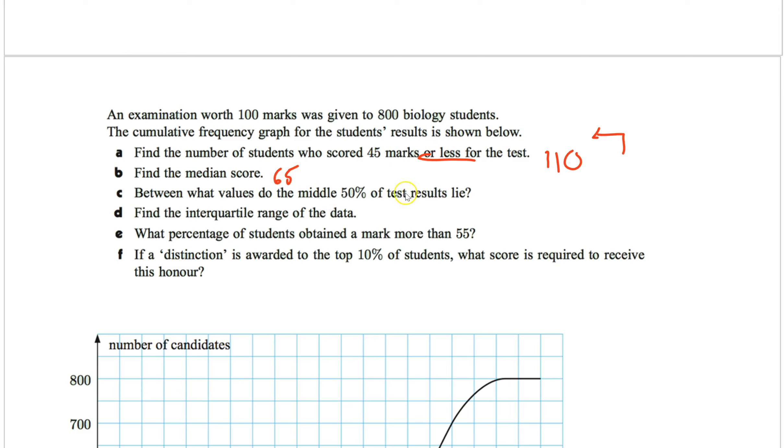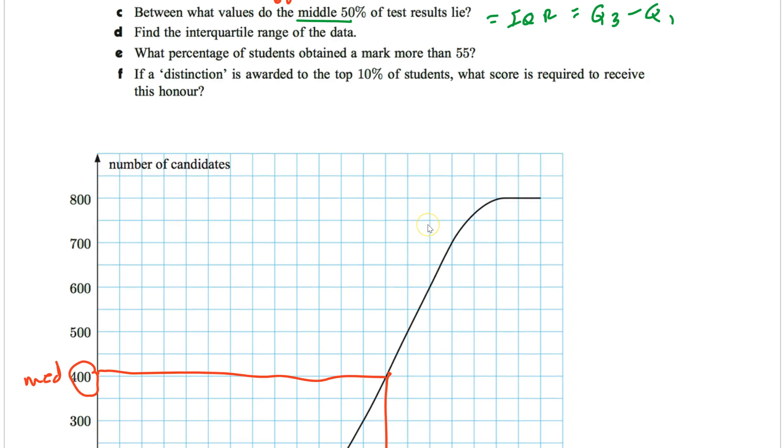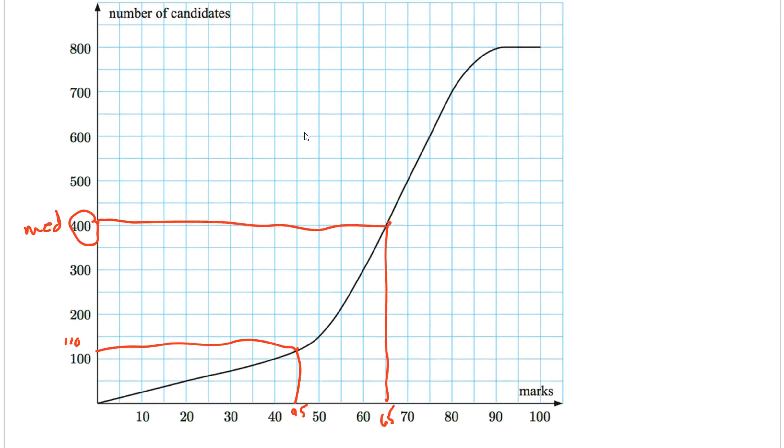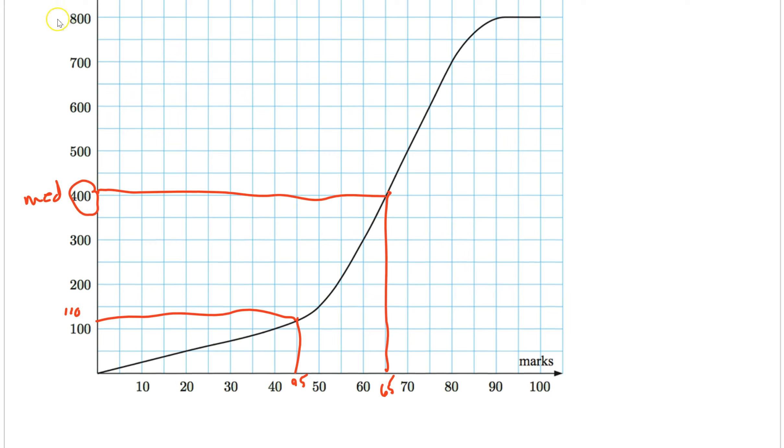Now the middle 50%, between the values of the middle 50%. Now that's just like vocab. Everyone's middle 50 means IQR. So this is Q3 minus Q1. So I've got to find those. Actually between what values. So I'm not going to subtract. I'm just going to state those values. They didn't say find IQR. It says between what two values. So I've got to find Q3 and Q1. So Q3, let's do that first. So here's 800, here's 400. Q3 would be halfway, which would be right there. Upper quartile. Go across. And let's go down. So about 75.